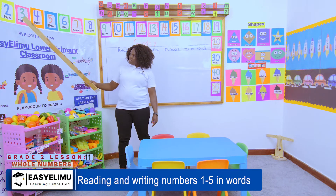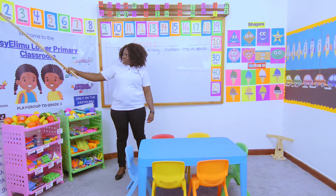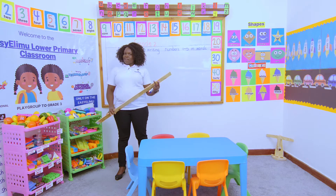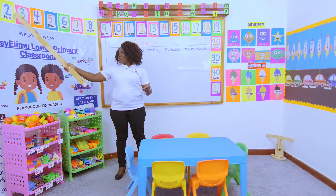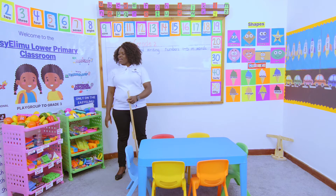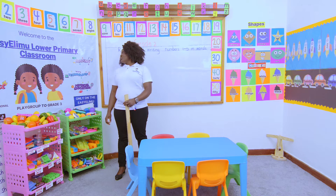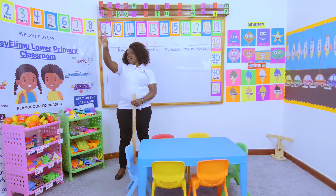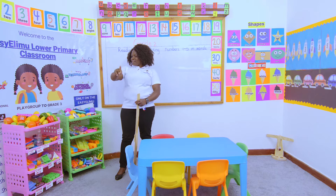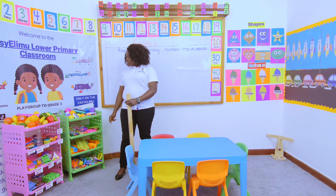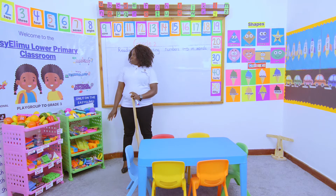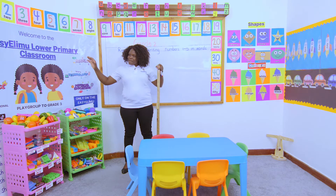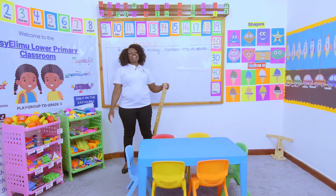We did numbers starting from 0, we came to 1. One like a stick. Let's draw 1 in the air — 1. Then the next number after 1 was 2. Two like a duck. Let's draw 2 in the air — 2. Number 3 comes after number 2. Three like a butterfly.